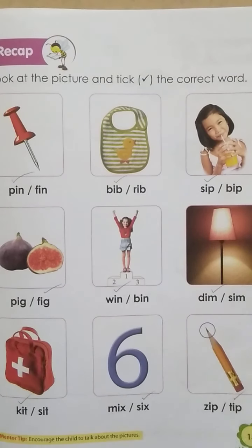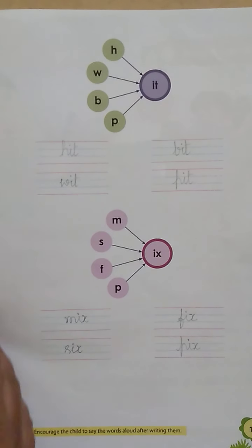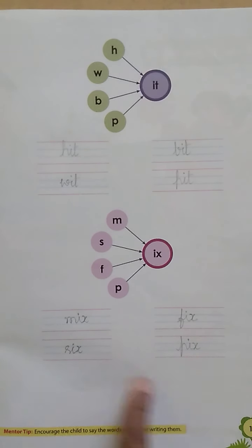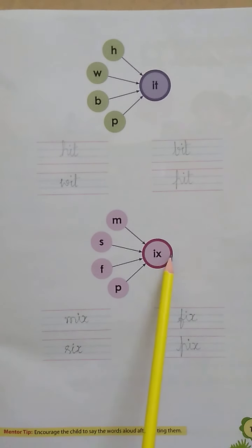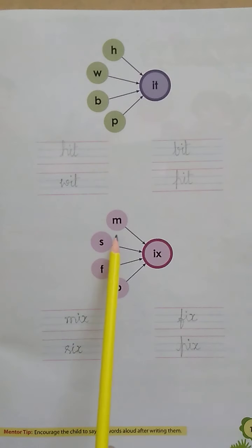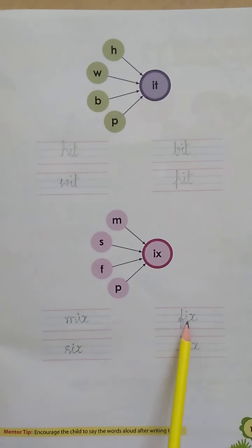Now let's move to the next page. In page 16 and 17 you have to write the words. You have to use this letter and mix it with this sound and write the name. Ma-x: mix. Sa-x: six. Fa-x: fix.